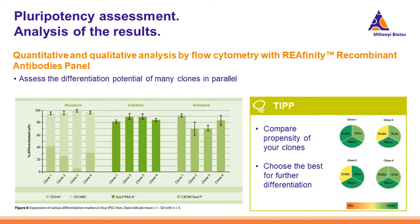Here as an example, you can see the assessment performed with our REAfinity Recombinant Antibody Panel. The panel consists of two marker combinations for each germ layer and includes both surface and intracellular markers. This is not only a fast readout of the pluripotent potential of a line, but it also allows us to better understand if our lines are biased towards differentiation into one specific lineage.